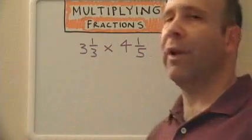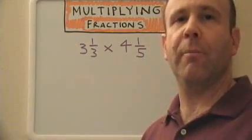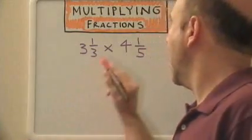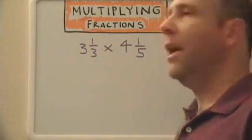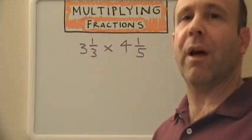For the first problem, we're going to go ahead and multiply two mixed numbers. Three and one-third times four and one-fifth. The first thing we're going to do is change these mixed numbers to improper fractions.